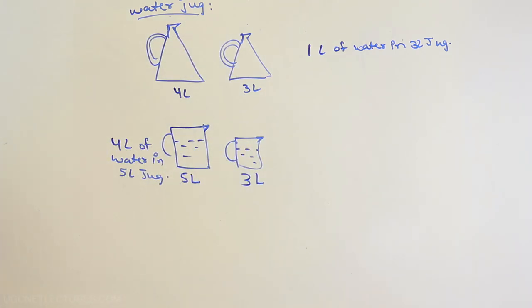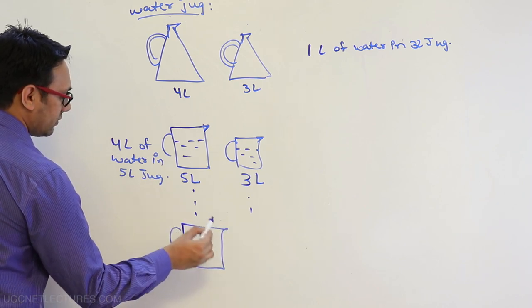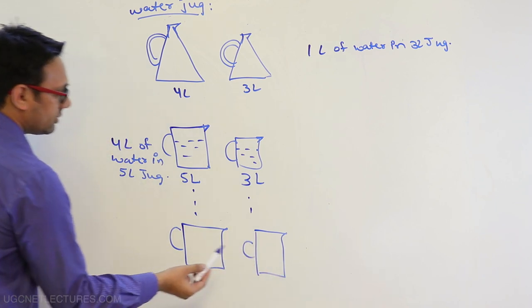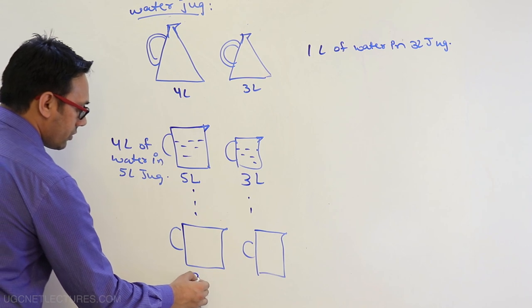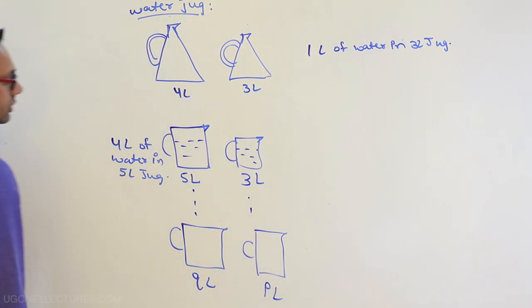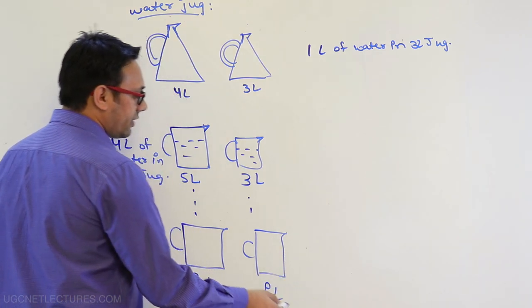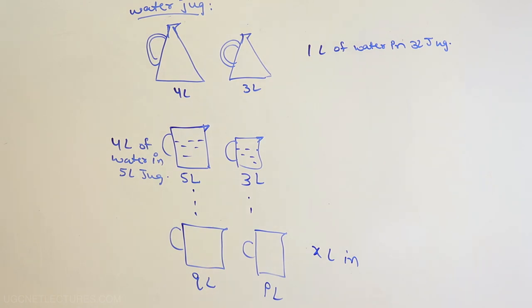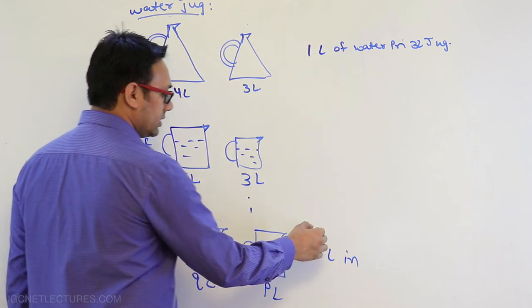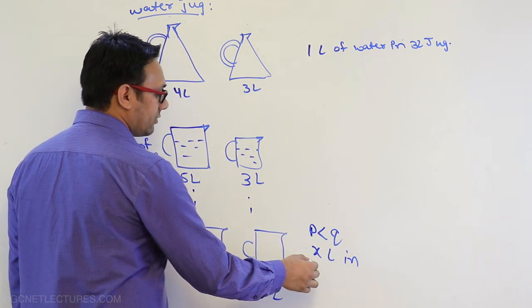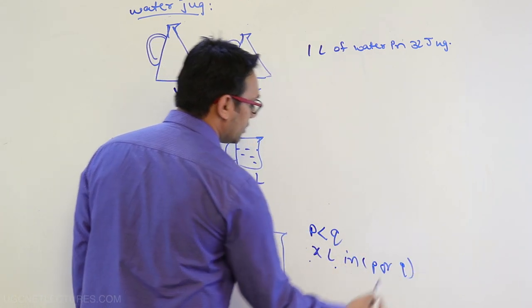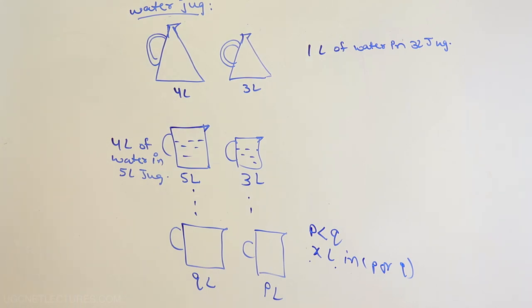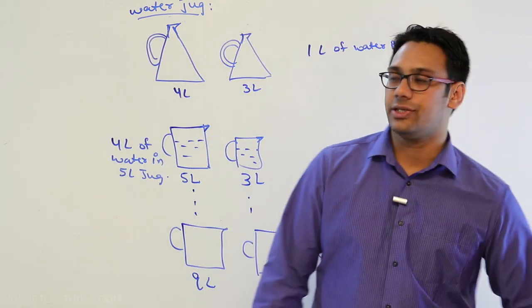There are more variations to this problem with different capacities. In the general case, this is the first jug having q liters capacity and the second jug having p liters capacity. The question asks: can you find x liters of water in the q liter jug or the p liter jug? The p liter jug has a larger capacity than the q liter jug. Can you find exactly x liters of water in either jug?